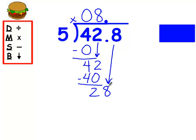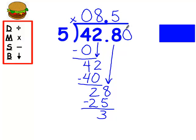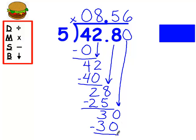How many groups of five out of twenty-eight? I can get five. Five times five is twenty-five, and I have three left over. You cannot have a remainder when you have a decimal point in your answer. You have to add a zero and drop it down. How many groups of five out of thirty? I can get six. Six times five is thirty, and I'm done because there's nothing left over.